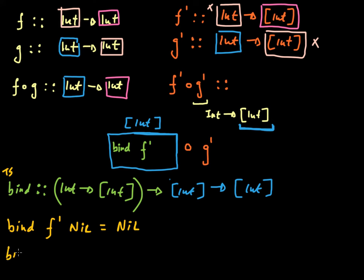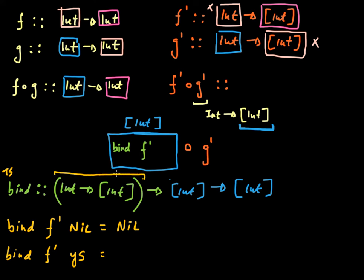What if this list is not empty? Well, if it's not empty — f prime applied to something, let's call it ys — what should I give back as an output? As an output I should give back something that is another list of integers. Now f prime is a function that only takes in a single integer, but what I have is a list of integers. So what I really need to do is extract one of these ys out and feed it into f prime, keep on feeding into f prime. So I'm going to use map here.